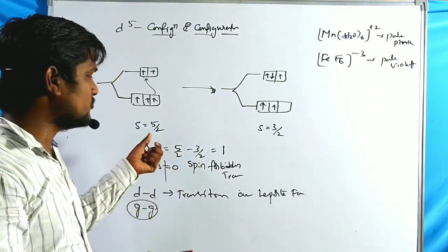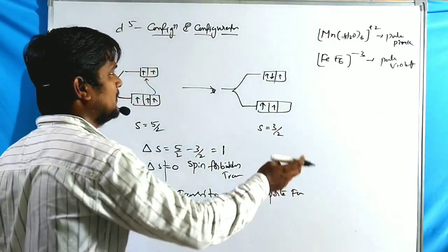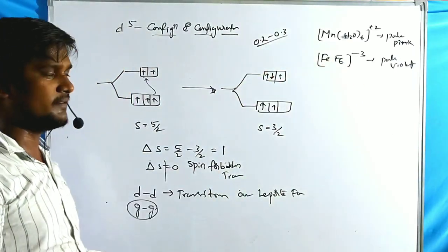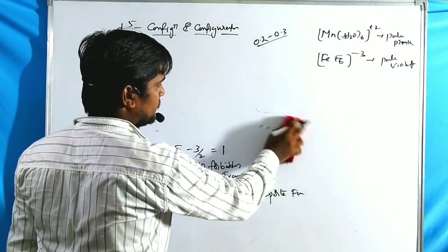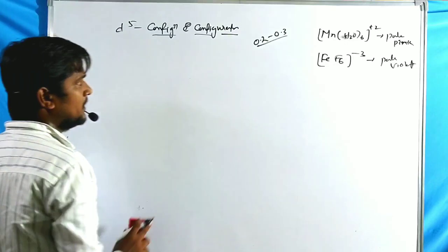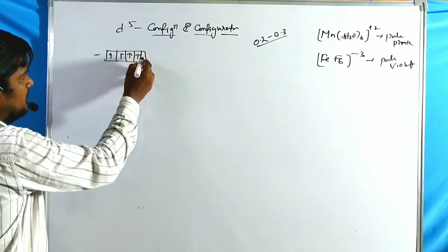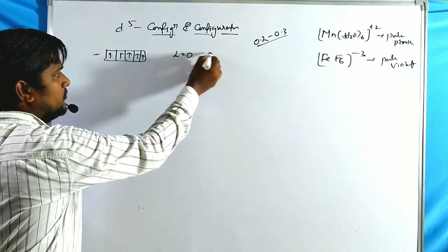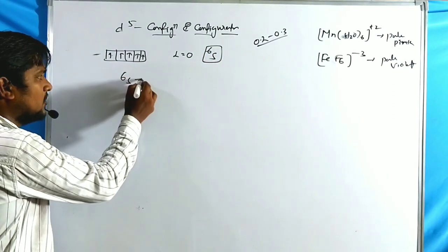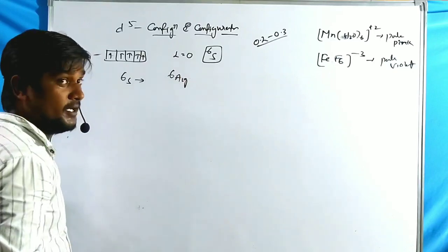The reason for the pale colors of d⁵ complexes is explained by a diagram similar to Tanabe-Sugano diagrams. For the d⁵ configuration, all five electrons have L equal to zero, so the ground term is S. With spin multiplicity 2S+1 = 6, the ground term symbol is ⁶S. In an octahedral field, according to Mulliken symbols, this transforms into ⁶A₁g.